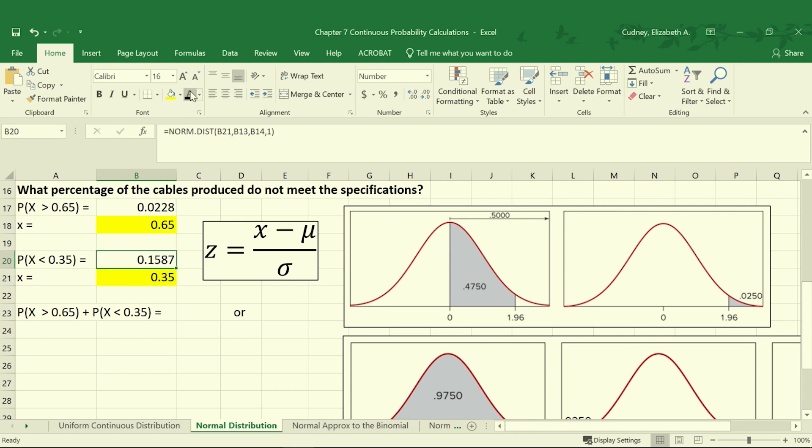In cell B20, we're going to use our NORM.DIST function again. However, this time, since we're calculating everything to the left portion of the curve, we're not subtracting from 1, because that value is already given to us with this function.